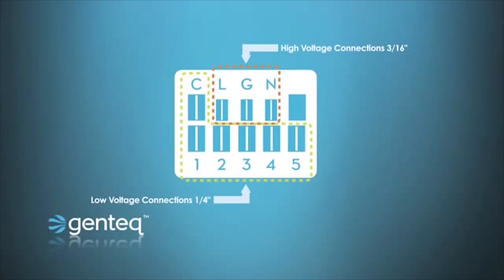You'll notice from this picture that the high voltage L, G, and N terminals are actually smaller than the low voltage connections, the C and the 1 through 5. This was done on purpose so that a high voltage wire could not be put on a low voltage connection, which would be bad for the motor.